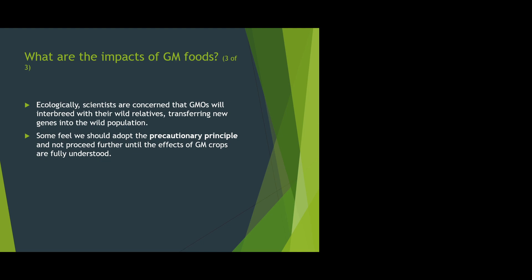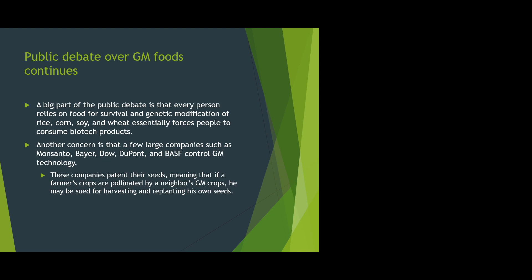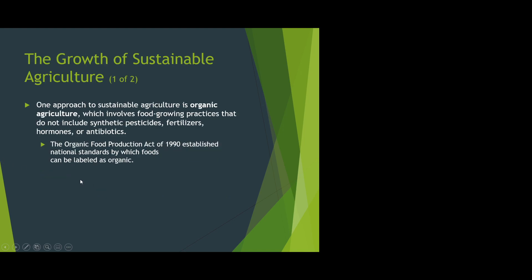Some also feel we should adopt the precautionary principle — don't release those genes into seeds until you know what will happen ecologically and whether that gene can be passed on. That's probably my biggest concern when it comes to ecology. Another part of the public debate is that every person relies on food for survival, and genetically modified rice, corn, soy, and wheat essentially forces people to consume a biotech product that is basically patented — meaning companies can sue small farmers. Corn is cross-pollinated. There are also ethical concerns depending on your religion or values around whether man should be manipulating individual crops.